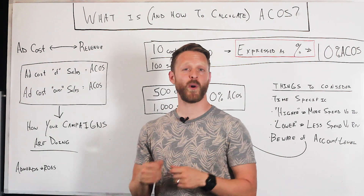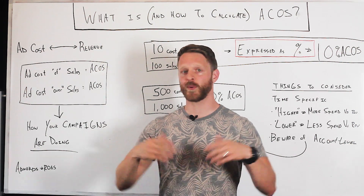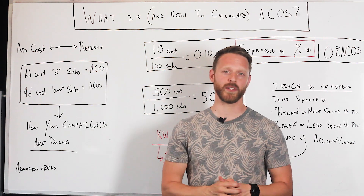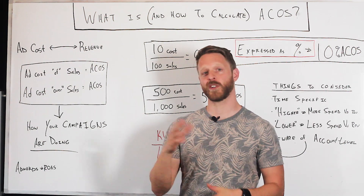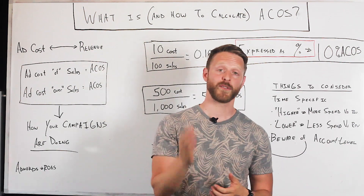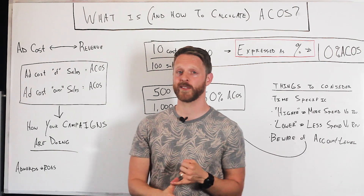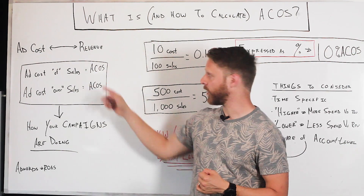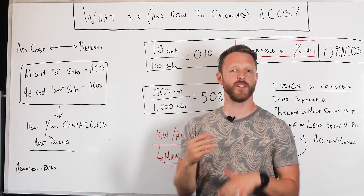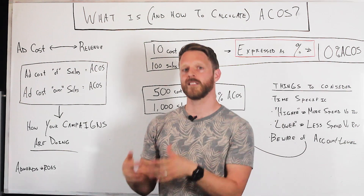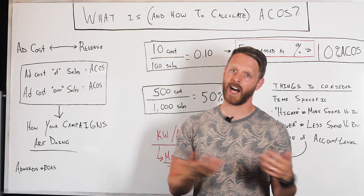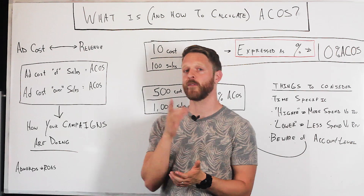There are some situations where people may intentionally want a high ACoS — for example, situations where you want to boost your organic rankings. We'll talk about those in another video when we discuss ACoS goals. For right now, you should know that ACoS stands for Ad Cost of Sales, or ad cost over sales, and that in general a lower ACoS is typically more desirable than a higher ACoS.